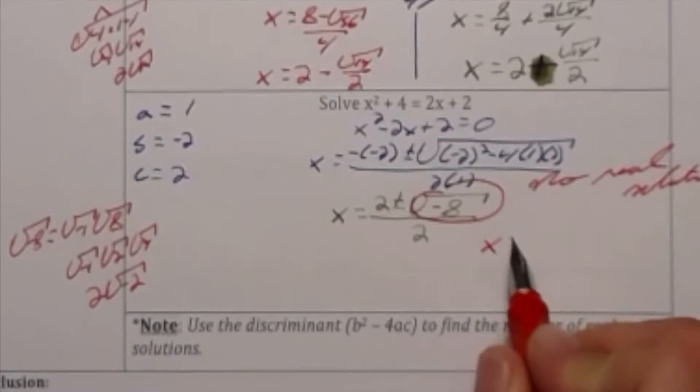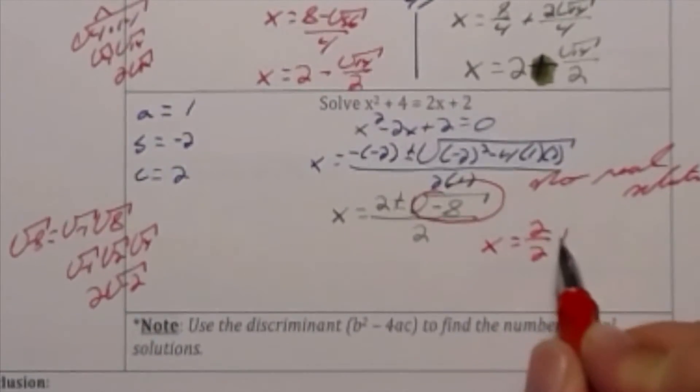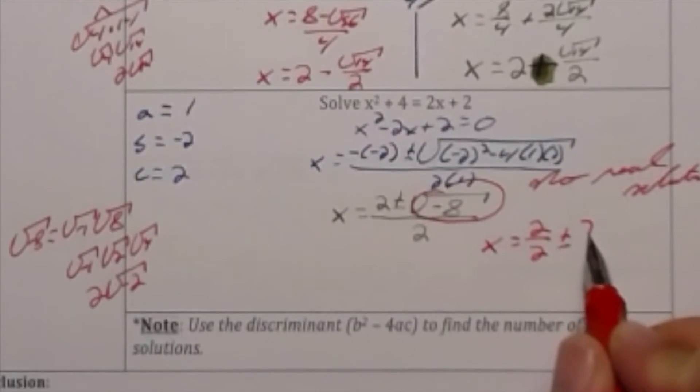So x is equal to 2 divided by 2 plus or minus 2 radical negative 2 all divided by 2.